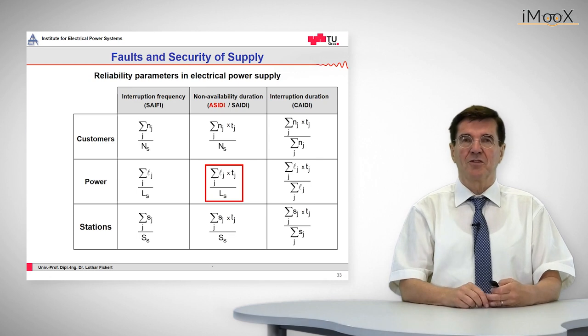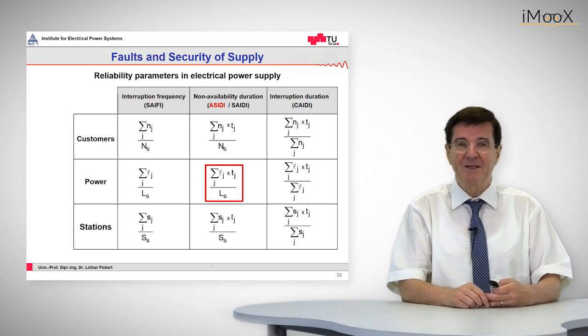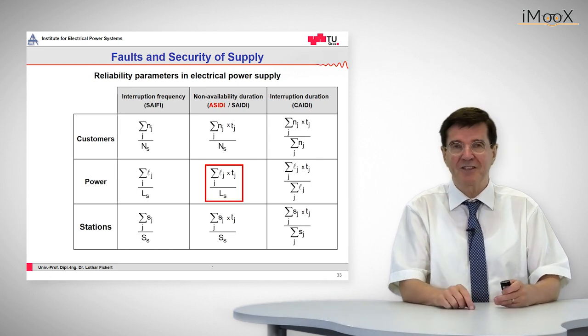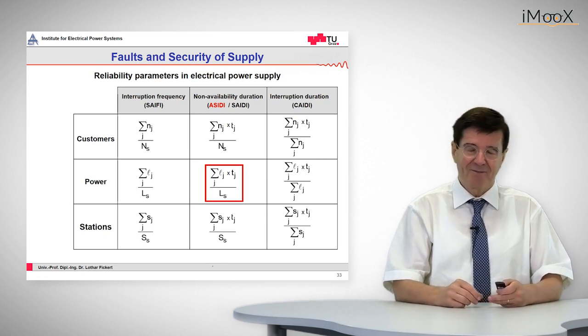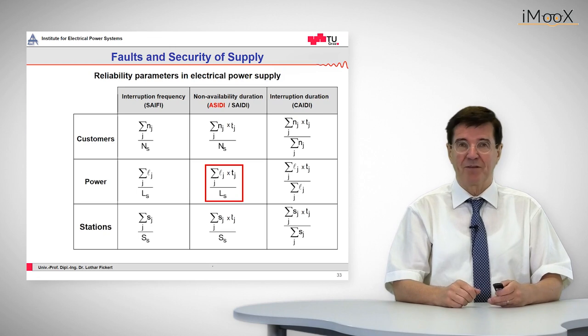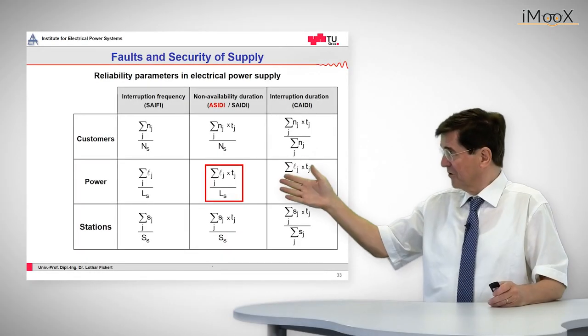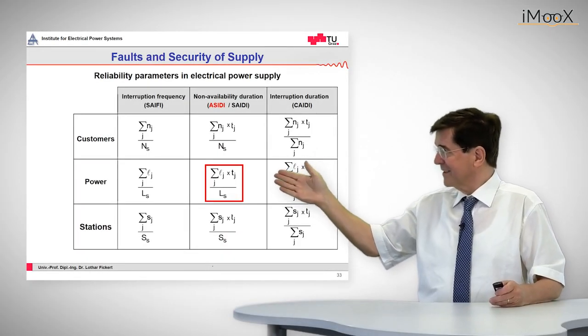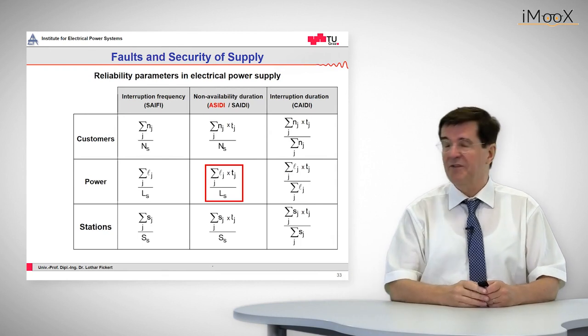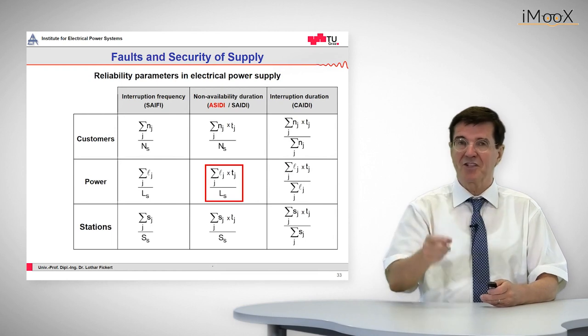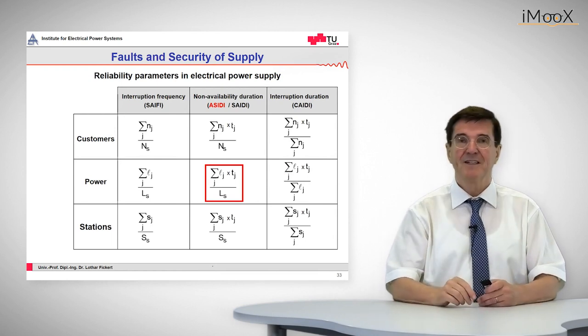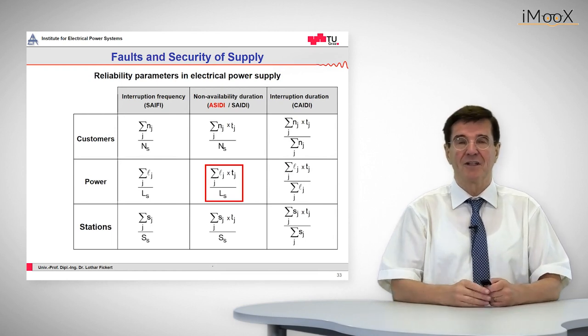How do regulators measure and take care of these protection functions? That is done by the so-called ASIDI figure: Average System Interruption Duration Index. That means a weighted outage time, where weighting is done by the power not supplied. This ASIDI figure is given by the product of the power and the outage time, which is the energy not supplied.